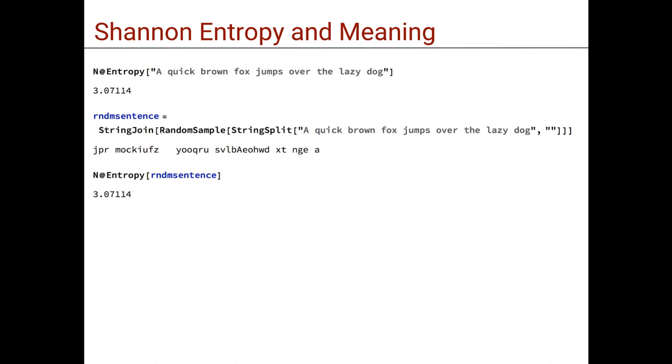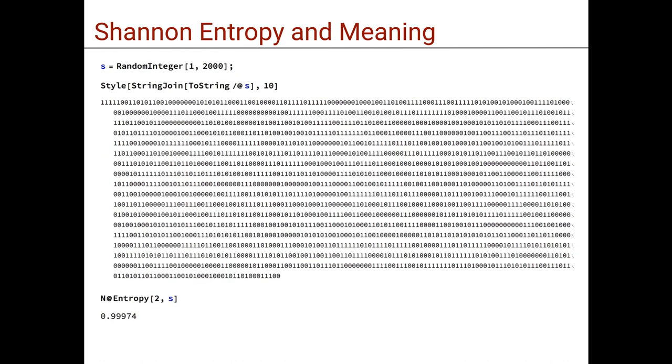However, if we consider only the set of valid English sentences to build the underlying probability distribution on which entropy would operate, then the sentence in English would have much lower entropy, because we would know that in English, for example, it is very rare or impossible to see the letter J next to P and R, or a word starting with Z, and those kind of information that we could infer from knowing and using the distribution of sentences in a language like English.